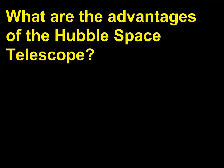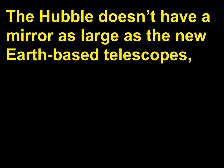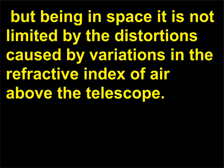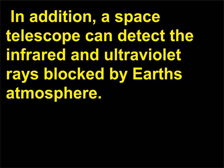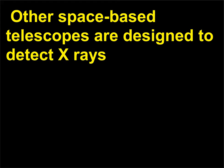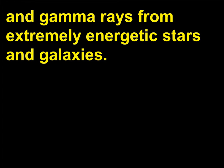What are the advantages of the Hubble Space Telescope? The Hubble doesn't have a mirror as large as the new Earth-based telescopes, but being in space it is not limited by the distortions caused by variations in the refractive index of air above the telescope. In addition, a space telescope can detect infrared and ultraviolet rays blocked by Earth's atmosphere. Other space-based telescopes are designed to detect X-rays and gamma rays from extremely energetic stars and galaxies.